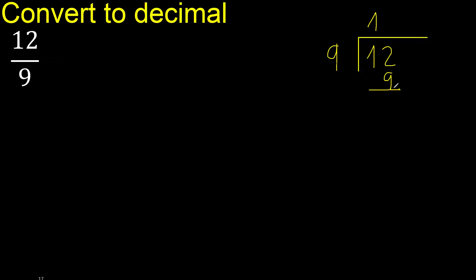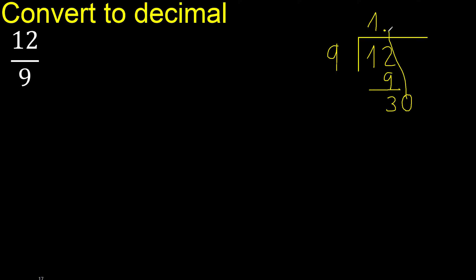12 minus 9 is 3. There is no next number, so complete with 0 — point, 0 point. Ok, 30.